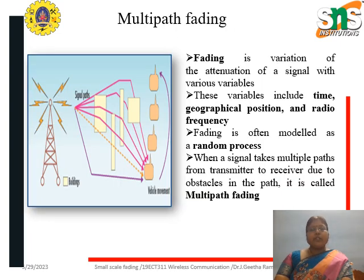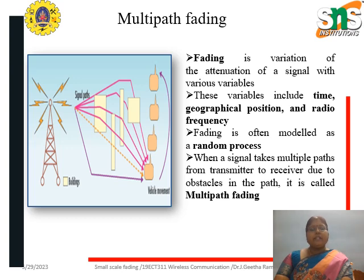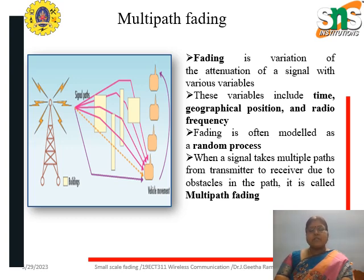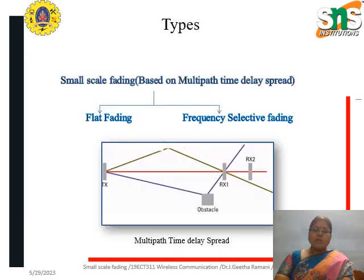Fading is defined as the variation of the attenuation of a signal with different variables. These variables may be time, geographical position, and radio frequency. Fading is often modeled as a random process because we cannot predict what happens in the case of a fading effect. When a signal takes multiple paths from transmitter to receiver due to obstacles in the path, it is called multipath fading.